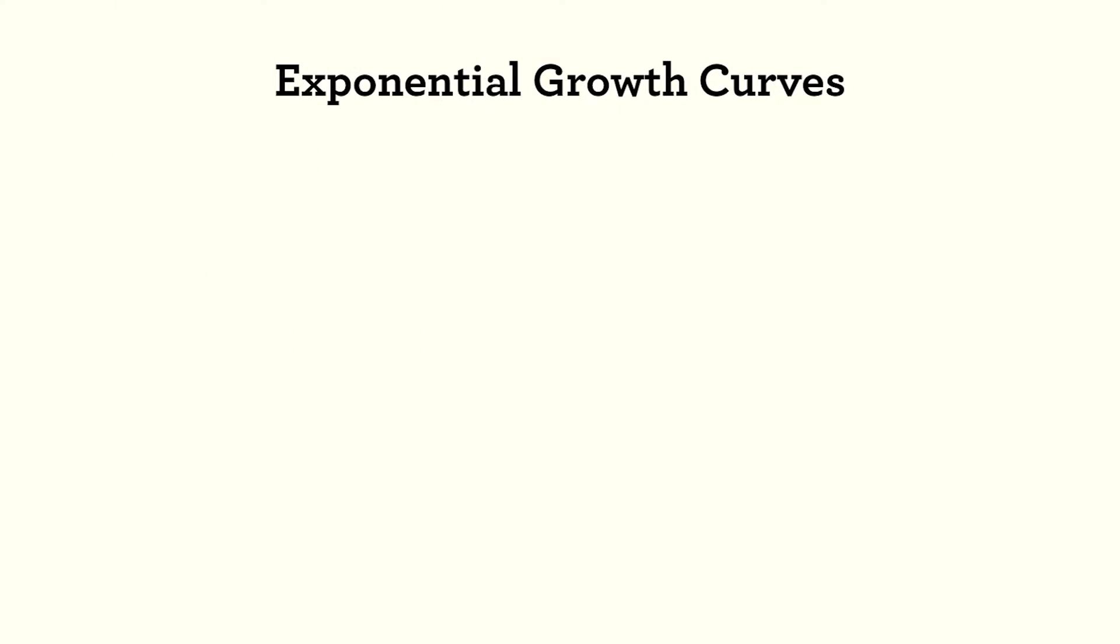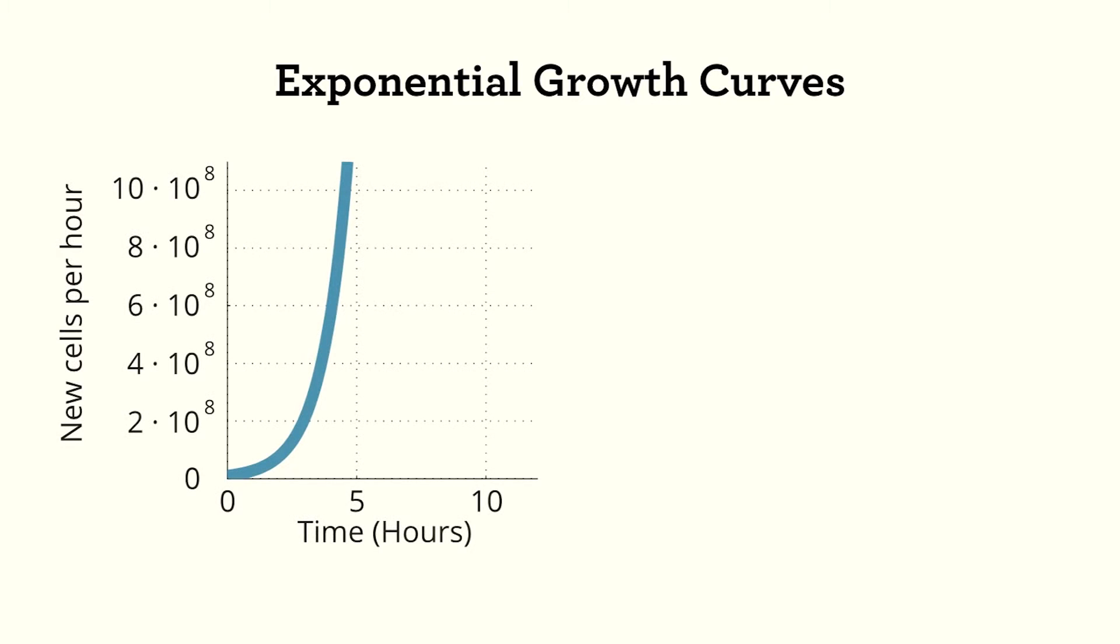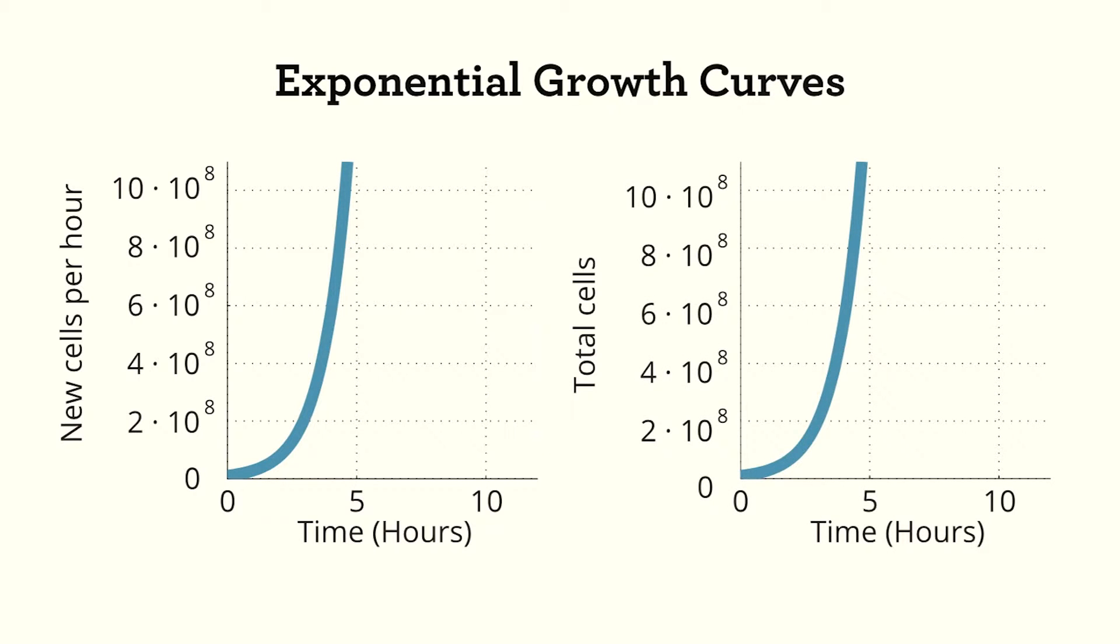This equation gives rise to these two curves. Here I plotted the number of new cells produced per hour. Notice how rapidly it increases from just a few cells to more cells than we can show on this graph. This extremely rapid increase is classic exponential growth. Here I plotted the total number of cells. Notice that the curves have almost the same shape. This makes sense. During cell division, each cell produces a new cell. Therefore, the creation of new bacteria is exactly proportional to the number of existing bacteria.